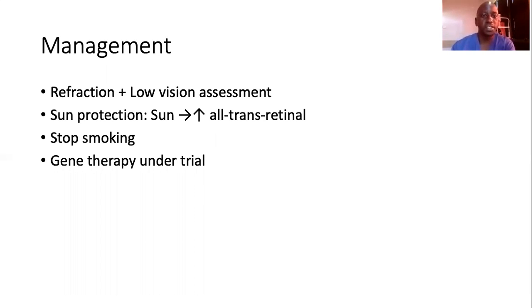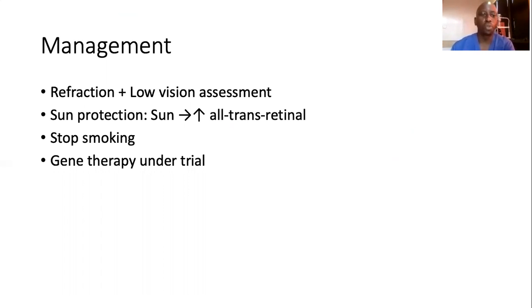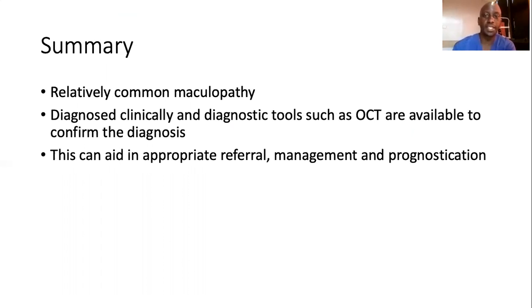When it comes to management, refraction should be done to get the best possible vision, but low vision assessment and low vision devices will be helpful since this is macular disease and magnification is necessary for better visual functioning. Sun protection has been seen to be useful because excess sun exposure increases all-trans-retinol in the retina, resulting in higher levels of lipofuscin and more damage. Smoking is known to cause progression of Stargardt's disease, so we advise all patients to stop smoking. Gene therapy is currently under trial and so far looks quite promising, with patients improving in visual acuity in cases seen so far.